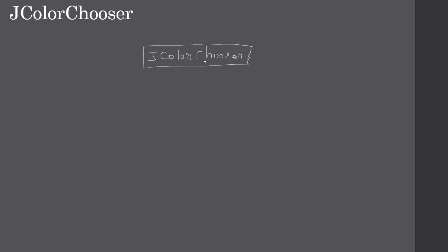The class is JColorChooser and Swing provides this JColorChooser. All you have to do is make a call to the method showDialog, which is a static method - so you don't need to create an instance. You can directly call JColorChooser.showDialog. The method accepts three parameters.